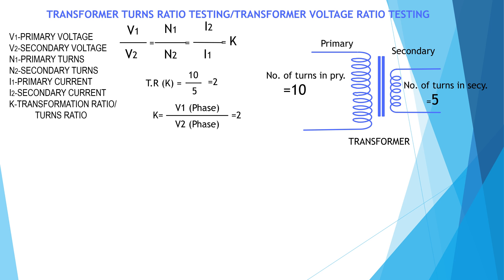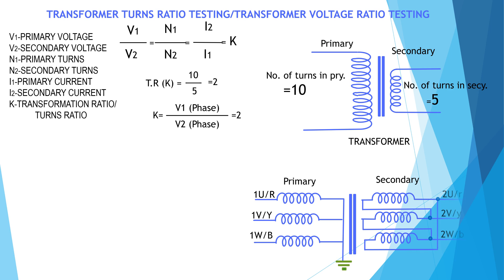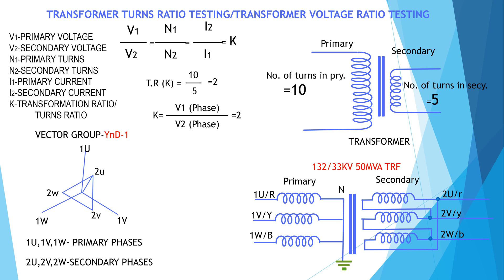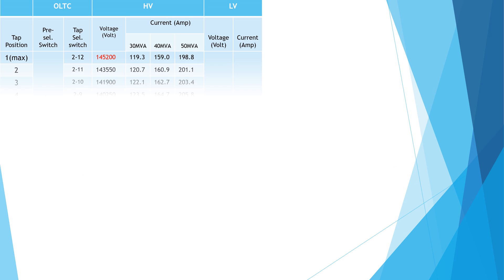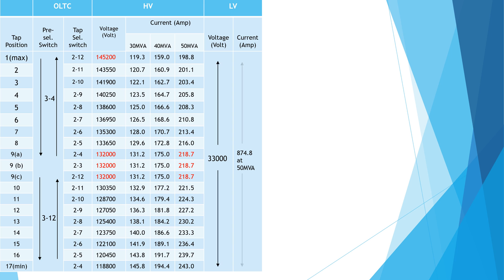We are going to conduct test by animation on a star delta 132 by 33 kV transformer whose vector group is YNd1. We know in star side phase voltage is equal to line voltage by root 3 and in delta side phase voltage is equal to line voltage.